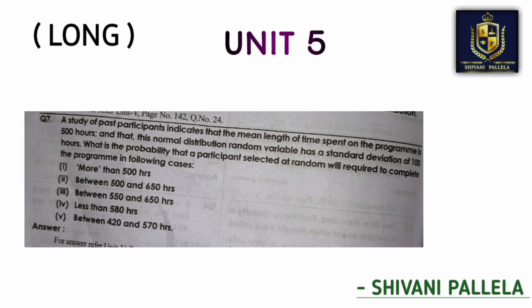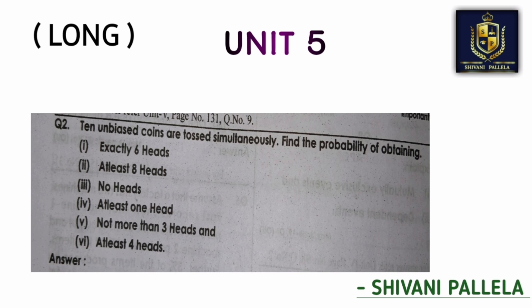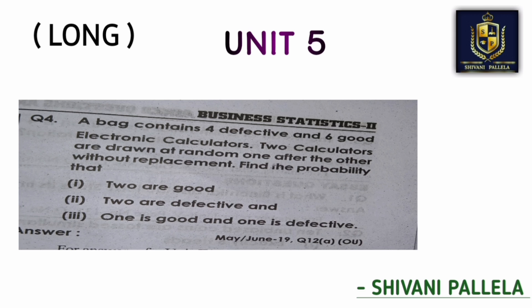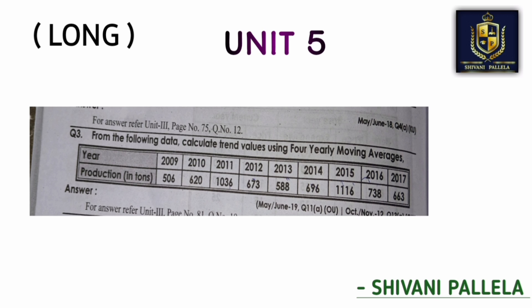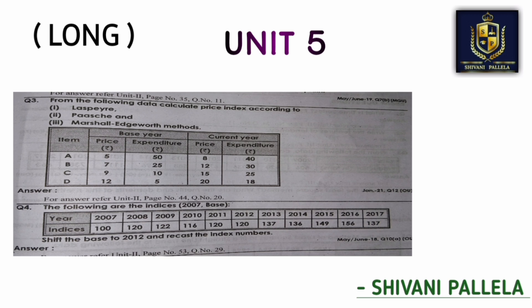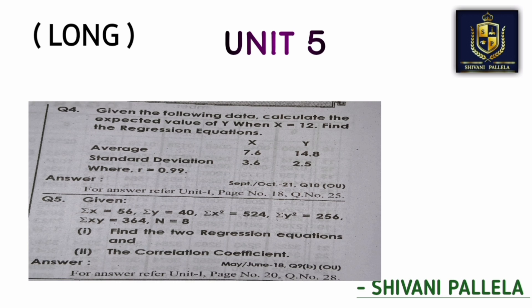For long problematic frequently repeated questions: from Unit One — Regression method; from Unit Two — Fisher Index, Marshall Index, and Bowley's Index; from Unit Three — two, three, four, five, and seven years Moving Averages, and also Trend Analysis; from Unit Four — Bayes' Theorem and Probability; from Unit Five — Poisson Distribution. There is also a chance of theory in long for Unit Five.